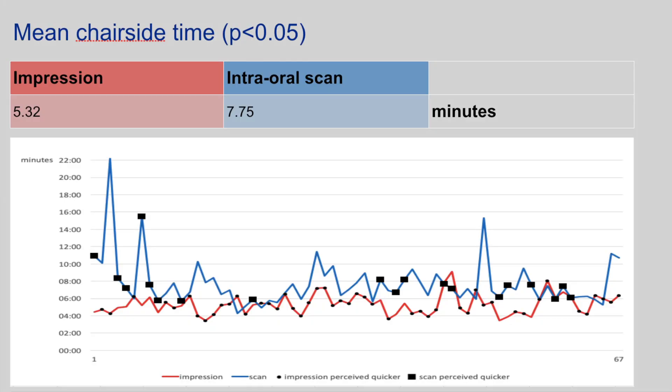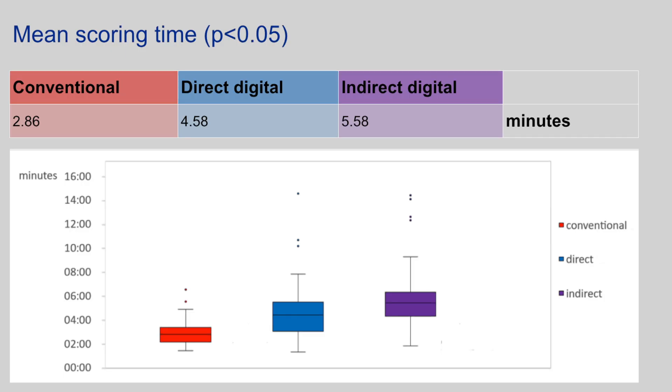Amongst the secondary outcomes, mean chair-side time for intra-oral scanning was significantly higher at almost 8 minutes, compared to 5.35 minutes for conventional impression taking. The differences in scoring times were also significant. 91% of patients preferred intra-oral scanning. There were no associations between procedure preference and patient age, gender, or the order in which the clinical procedure was performed, or even the procedure that was perceived as being quicker.